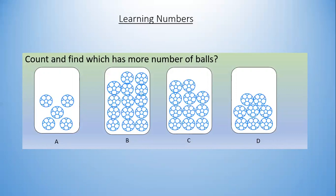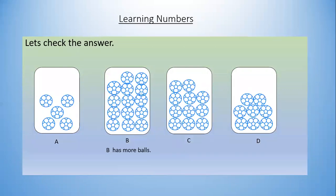And figure D, 1, 2, 3, 4, 5, 6, 7, 8 — it has 8 balls. So which has more number of balls? From the picture you can see B has more number of balls. It has 14 balls. Let's check. Yes, B has more number of balls. We are right.